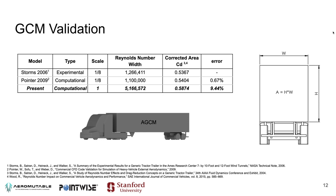Comparing our result with STORMS' experimental result, our coefficient of drag is about 9.4% higher. This makes sense since we're using a modified GCM model with a wider tractor, a longer trailer, the fifth wheel connection between tractor and trailer, the trailer stand which influences the flow, and the I-beam in the back — which influences the flow in the wake region, one of the areas that produces a high amount of drag in this ground vehicle.